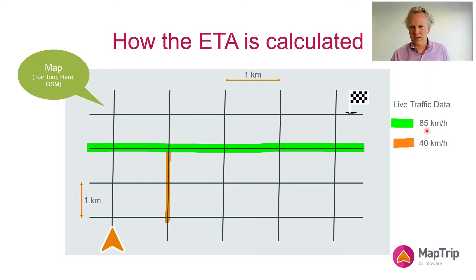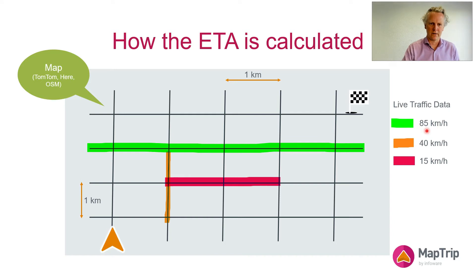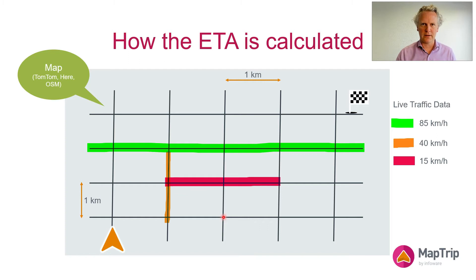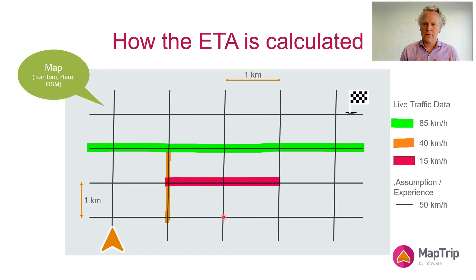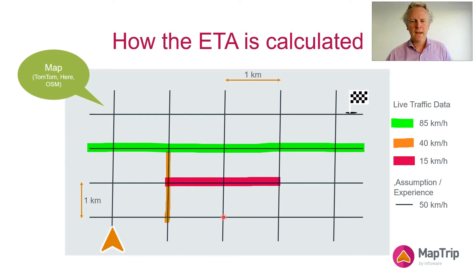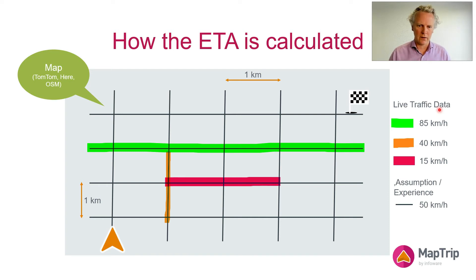The orange segments indicate traffic moving at 40 kilometers an hour, and the red segments are moving at 15 kilometers an hour. There are still a number of segments for which we don't have any information from the live traffic data, so we must make an assumption based on our experience. For simplicity, let's say 50 kilometers an hour is what we assume — it's more complex than that, but for the purpose of this explanation that's sufficient. These values are received live from TomTom at the moment the route is being calculated.